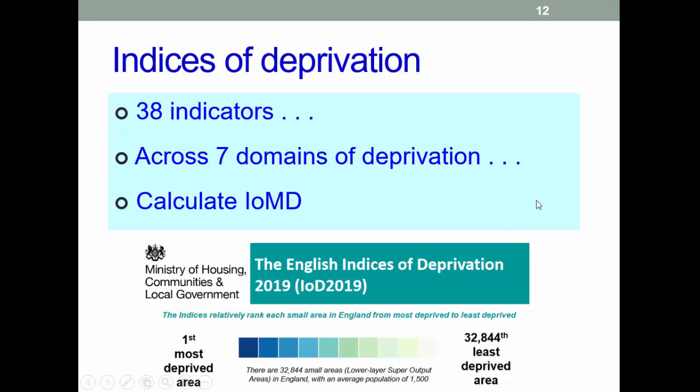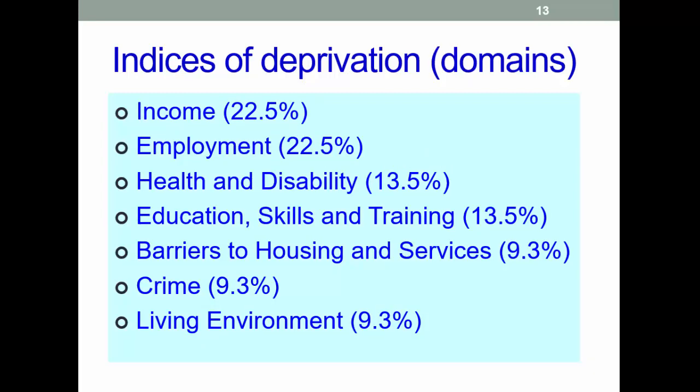There's a summary of the deprivation domains available via this indicator link. There are 38 indicators across seven domains of deprivation used in the calculation. Here they are, with the relative weightings given as part of the calculation of the overall score. Income and employment come to 45% of the total score — these two are obviously very closely linked. Health and disability is the next one, also a big score. Calculations are done on this basis, and it's important to notice the importance of the first two.